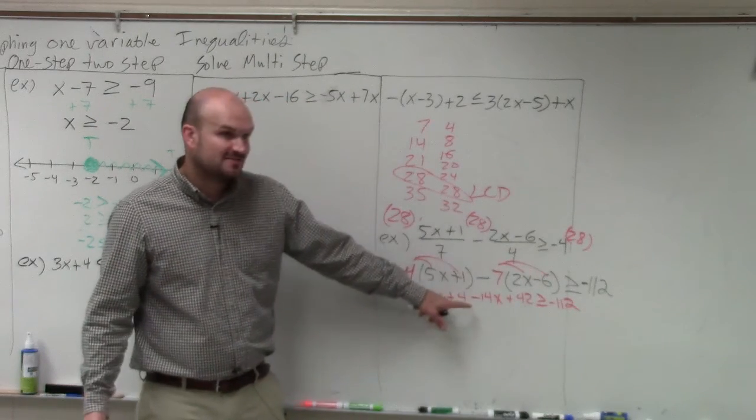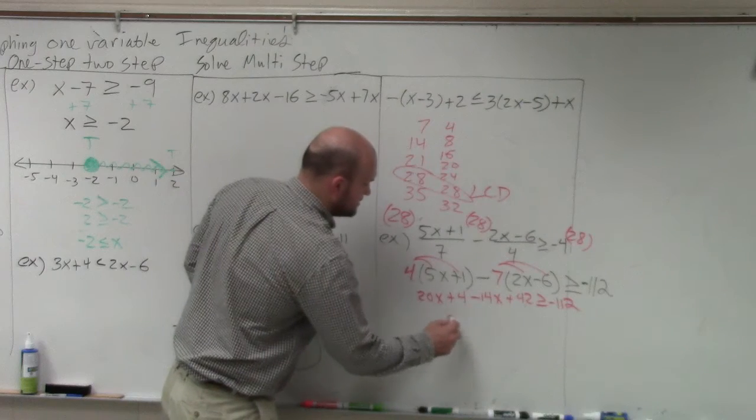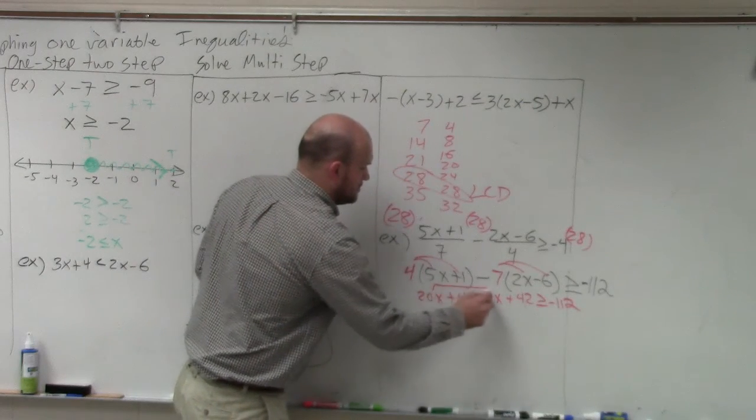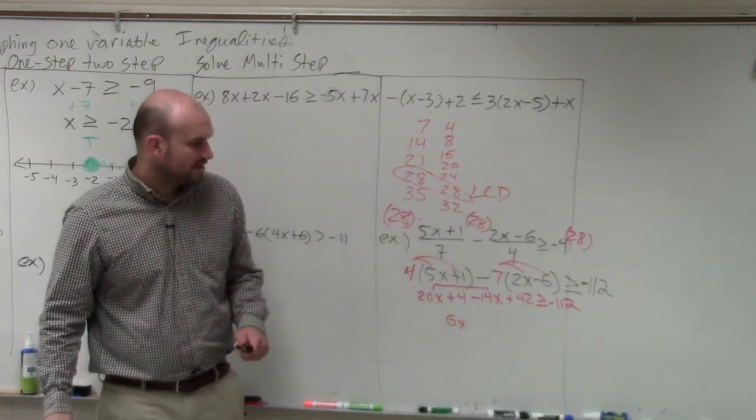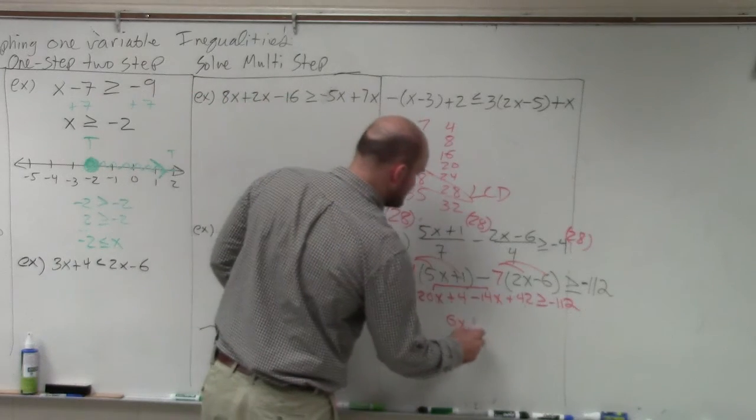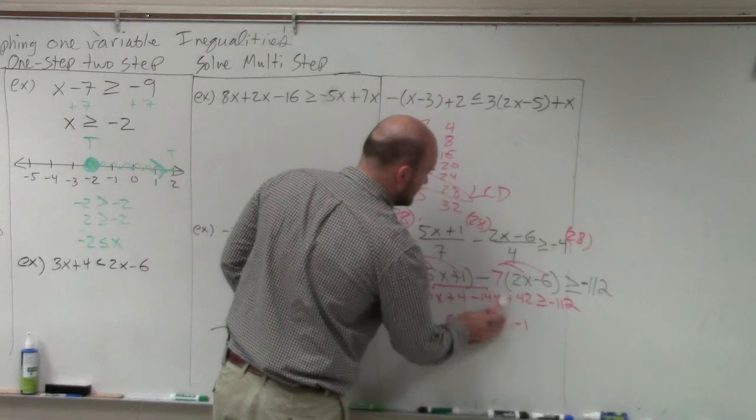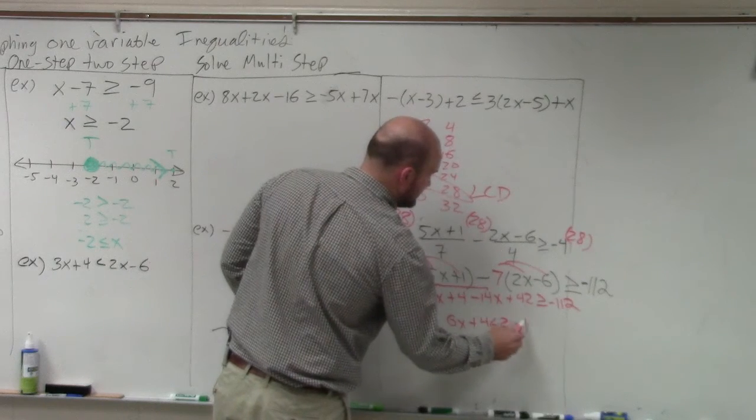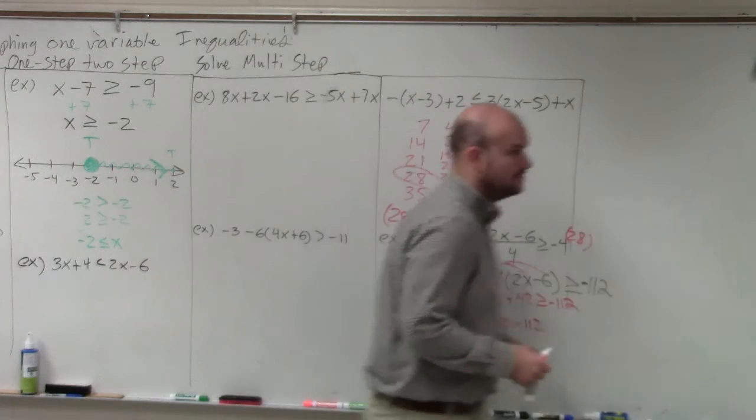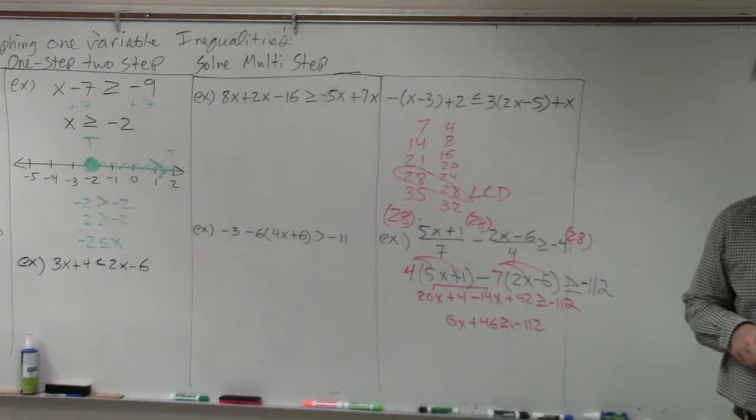So 20x minus 14x is 6x. And then 4 plus 42 is going to be 46. That's greater than or equal to negative 112.